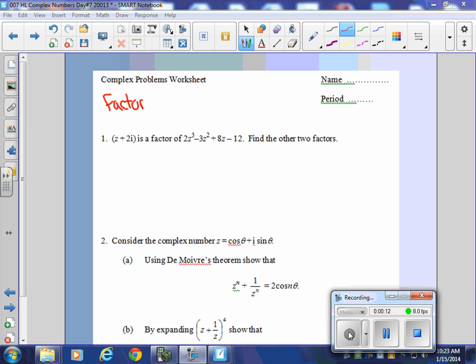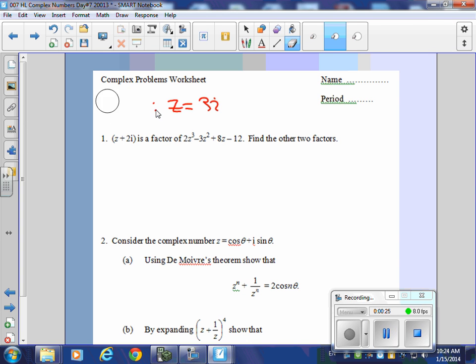See, a factor is something like z equals, let's say 3i. No, that would be the root. That would be the root. And so the factor, how do we turn it into a factor? z minus 3i is equal to 0.